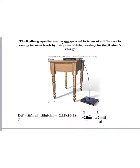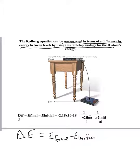The Rydberg equation can be re-expressed in terms of a difference in energy between levels by using this analogy. This is saying that the difference in energy between two levels is going to be the difference between a final and initial, and that's going to be equal to a different constant, this one, 2.18 times 10 to the minus 18, times 1 over n1 squared minus n2 squared. So this is just an energy version of the earlier equation.